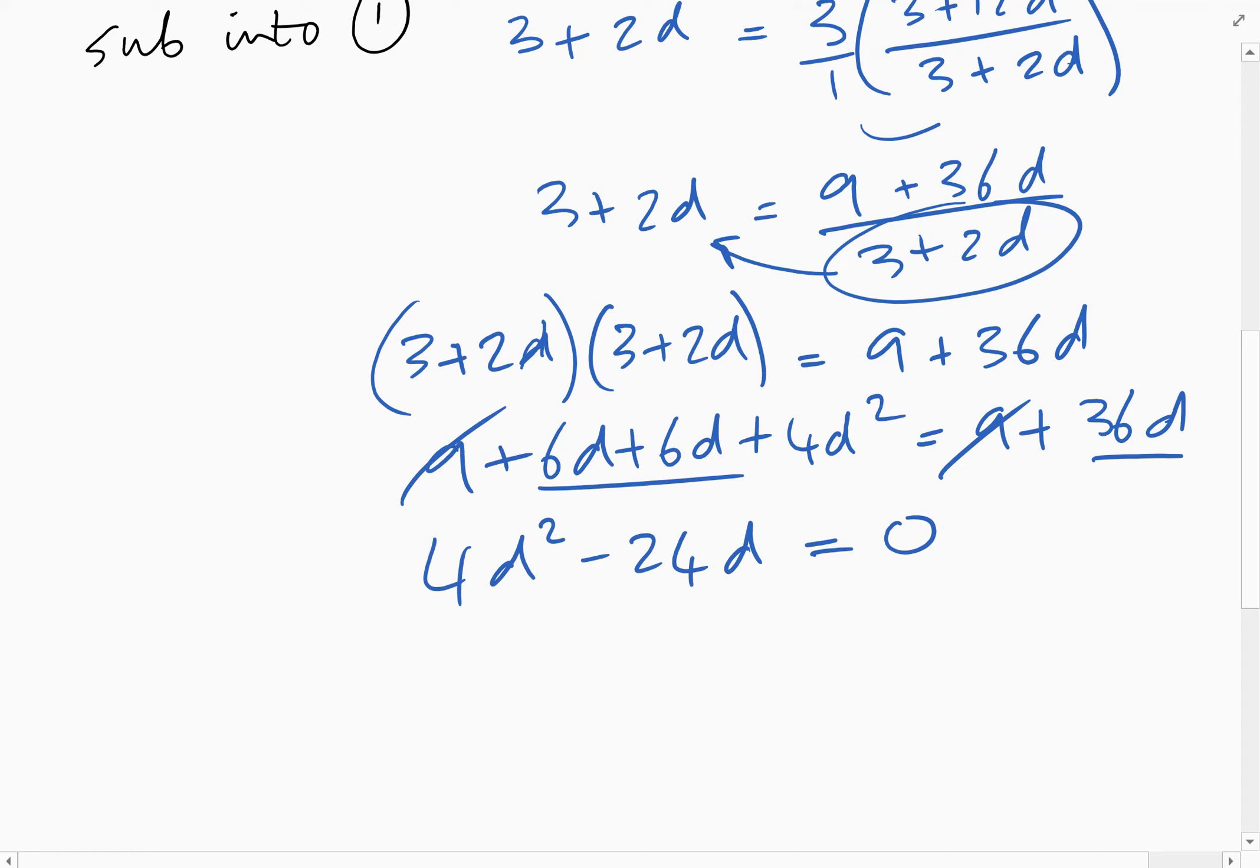Let's divide by four. So that's d squared minus 6d equals zero. You could just use the equation solver on your calculator to solve this quadratic, but I think it's quicker to divide by four and then just factorize, because you can just take the d out now. And straight away we know that d equals zero or d equals six.